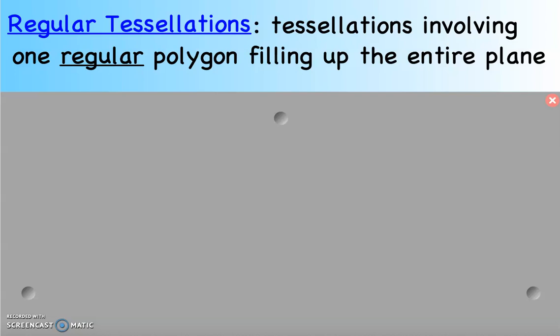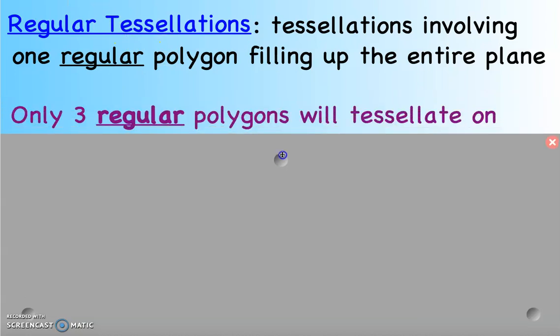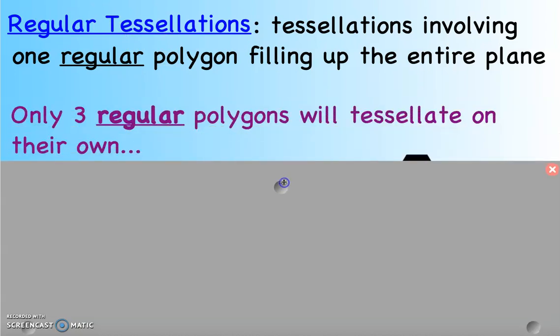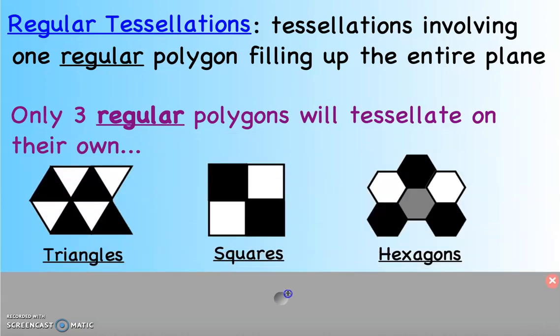Let's get in and talk about mathematically some of the different tessellations that are out there and some that we can make. I want to start with one of the simplest ideas, and that is a regular tessellation. A regular tessellation is one that involves using only one regular polygon to fill up the entire plane. Now remember, a regular polygon is a polygon in which all sides and all angles are congruent. It turns out there are only three regular polygons that will tessellate on their own. And those three regular polygons are triangles, squares, and hexagons. And that's it.